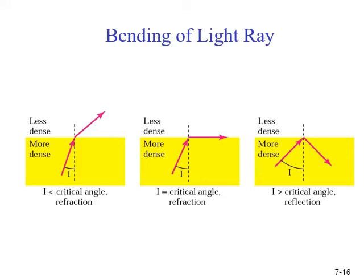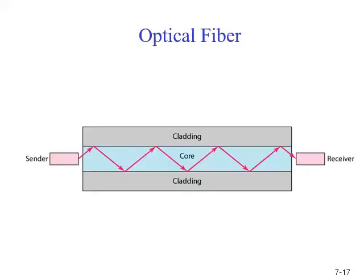Optical fibers use reflections to guide light through a channel. These are the reflections — you can see them all happening inside. A glass or plastic core is surrounded by a cladding, which is less dense glass or plastic. The difference in density of the two materials must be such that the beam of light moving along the core is reflected off the cladding instead of being refracted into it.